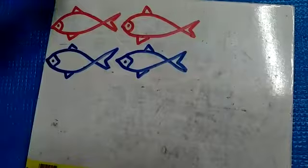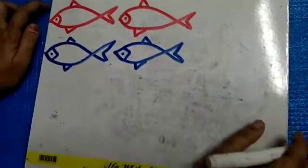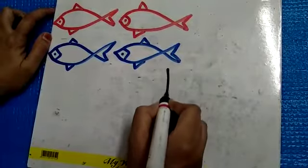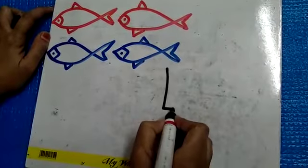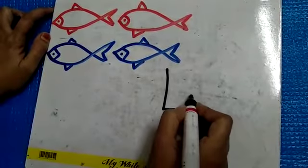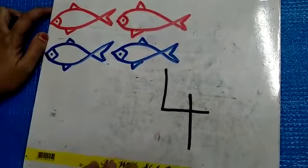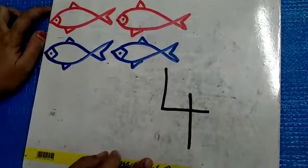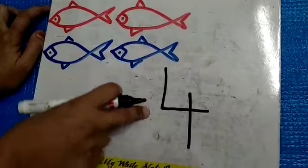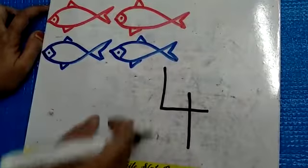Let's see how to write number 4. You will make a standing line, then one slipping line, again one standing line. This is number 4. Which number is this? Number 4.